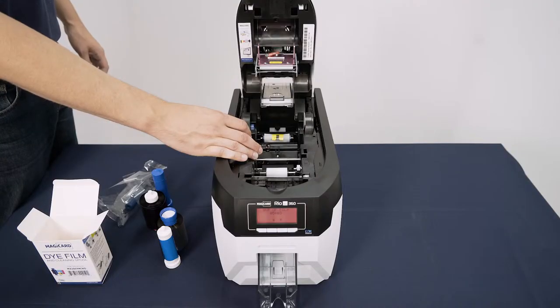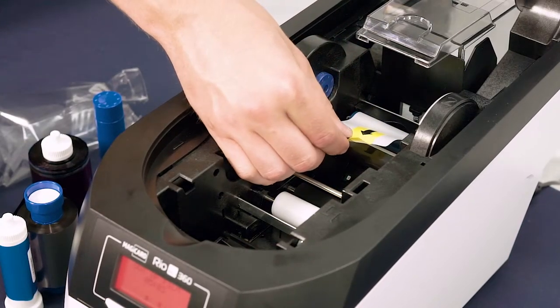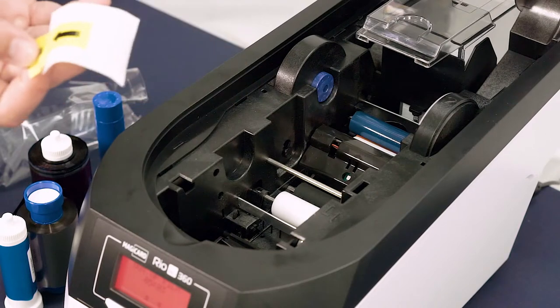Ensure the arrow on the protective layer is pointing towards the front of the printer. Remove the protective layer from the spool by gently pulling on the yellow tab.